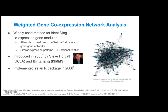WGCNA was first developed as an attempt to break down the hairball structure of gene-gene networks. I took 500 random genes from Archs4 and set an arbitrary distance measure threshold, and even then, no matter how low I make the threshold, you still get this very difficult-to-parse network or subnetwork of genes.